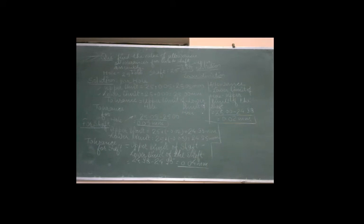In case of lower limit of the hole, we have 25 plus lower deviation 0.00, so the lower limit will be 25.00 mm. As we know, the formula for tolerance is upper limit minus lower limit of the hole. So the tolerance for the hole is 25.05 minus 25.00, which comes out to 0.05 mm.